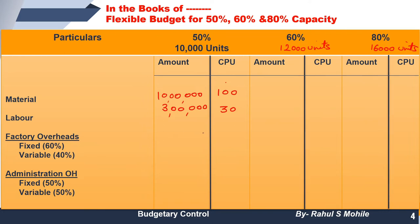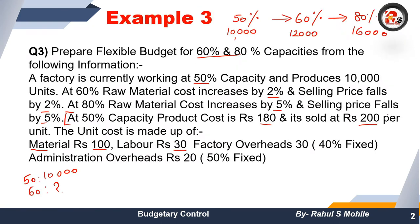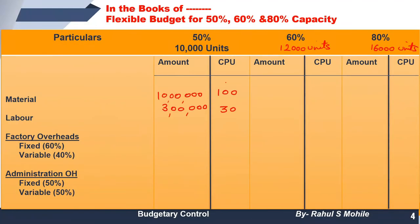So material at 50% capacity is 10,00,000 and labor is 3,00,000. Now there will be some adjustments — for raw material at 60% capacity, raw material cost increases by 2%. So 100 per unit becomes 102 per unit. Multiply 102 by 12,000 and you get 12,24,000 as material cost at 60% capacity.